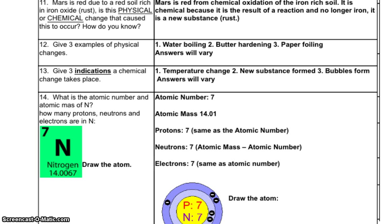Number 12. Give three examples of physical changes. We've got everyday water boiling, butter hardening from a liquid to a solid, paper folding. I'm not sure what that is, but if you crumple up a piece of paper, that's just a physical change. We're not changing the properties of the substance. We're just changing maybe its size, shape, or appearance somehow. Number 13. Give three indications of a chemical change taking place. Well, three indicators could be a temperature change going up or down. Number two, a new substance being formed, like in the case of iron turning into rust. Or three, bubbles form. We did our film canister rockets and we saw bubbles forming. We've also got some eggs sitting in vinegar in our classrooms and we've got lots of bubbles forming there. So that's an indication that chemical changing is taking place.